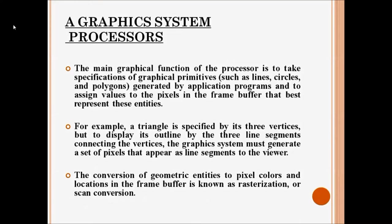The main function of the processor is to take the specification of graphical primitives written in a program. The processor assigns values to pixels in the frame buffer that represent these entities. For example, if I want to generate a triangle, I need three vertices.